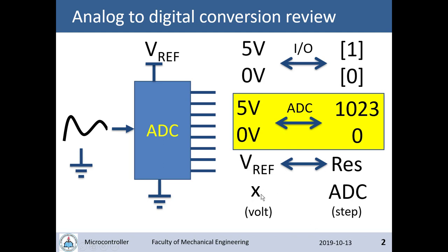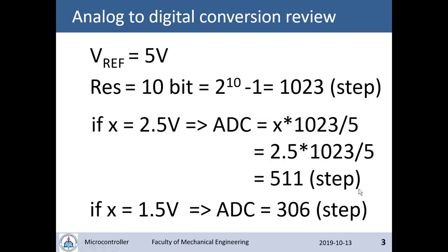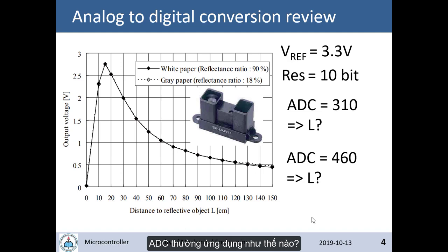If we place 2.5 volts at the ADC pin, the result is calculated as: voltage multiplied by the maximum resolution (1023), then divided by the reference voltage (5). So 2.5 × 1023 ÷ 5 = 511. Another example: if we have 1.5 volts at the ADC pin, then 1.5 × 1023 ÷ 5 = 306.